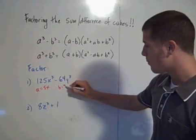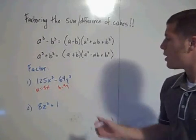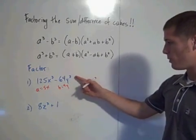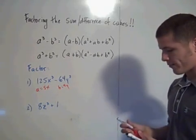And the quantity being cubed here, which is going to be your b value, is 4y. Because 4 cubed is 64 and y cubed is y cubed. So what does this factor to?